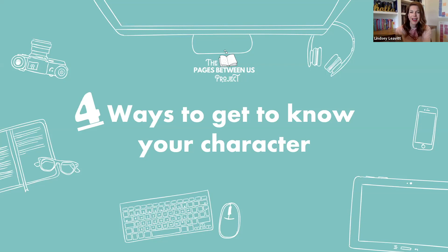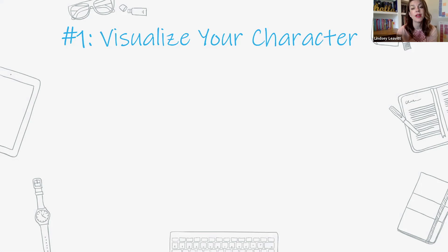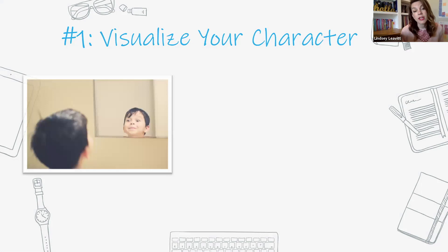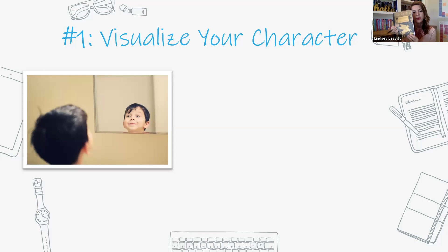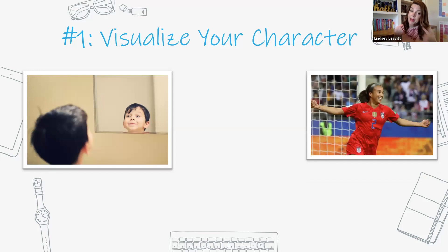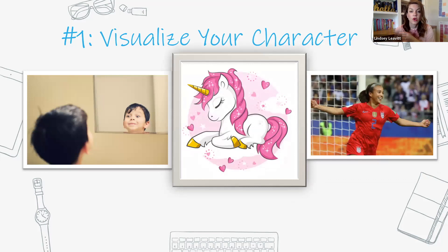The first one we have today is number one: visualize your character. You and your co-creator can either open a Google doc or get out a trusty pen and paper, and you get to choose what character you're going to focus on. Maybe at this point in your brainstorming process you don't have a character yet, and that's okay. Robin and I present three characters you can focus on: one is representative of you, another is someone you admire, or a fictional character.